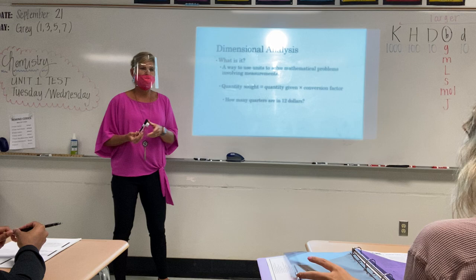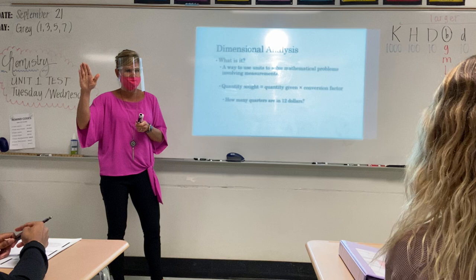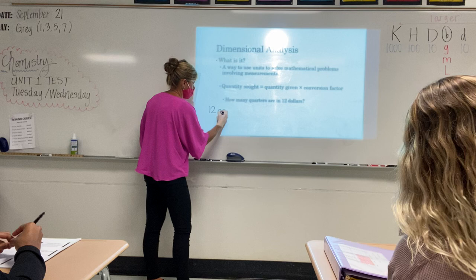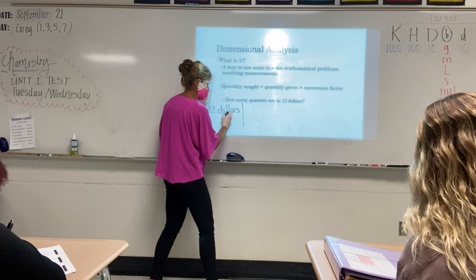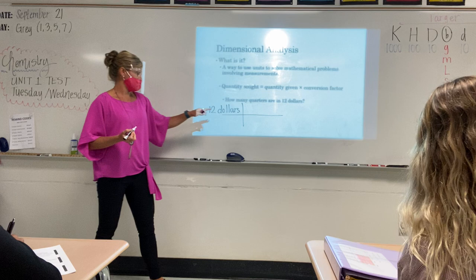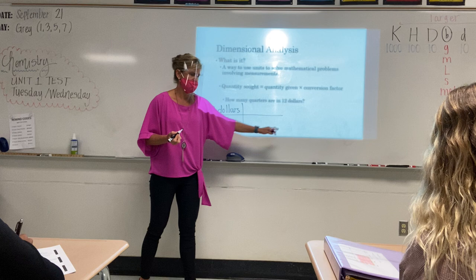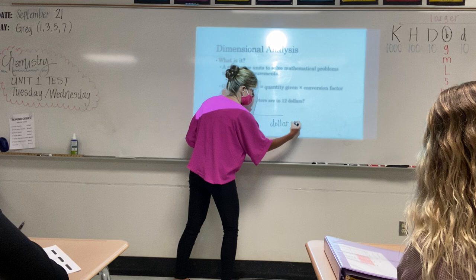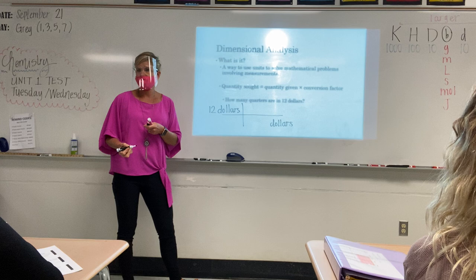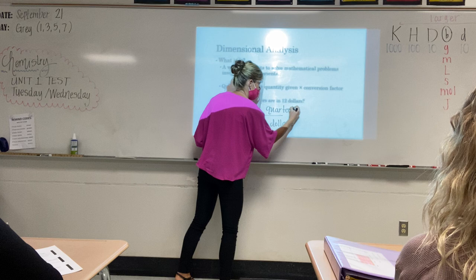How many quarters are in $12? Just like we did when we did our metrics, we're going to start with our given always. So write down your given — we have $12. You're going to set up your conversion factor just like before. The unit that is on top, we have to put that unit on the bottom so that it will cancel. So dollars is on top, dollars will go on the bottom. What unit are we trying to solve for? Quarters. So we can put quarters on top. Dollars will cancel.